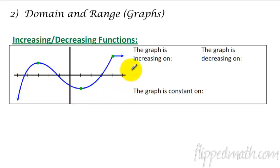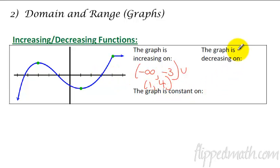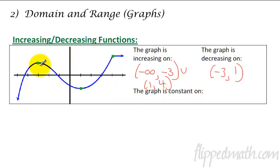Increasing and decreasing functions — this is where we're talking about the interval. The graph is increasing from negative infinity to the value of negative 3, so we go negative infinity to negative 3. Then it's also increasing from 1 — so we'll do a union — from 1 to 4. And then it's decreasing from negative 3 to 1. That's the only place it's decreasing, so negative 3 to 1. We just use parentheses on there because we don't actually include the peaks and valleys, because right at that spot it's not increasing or decreasing.